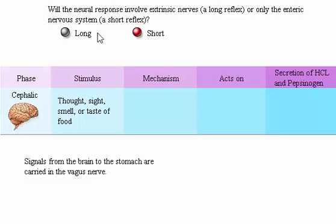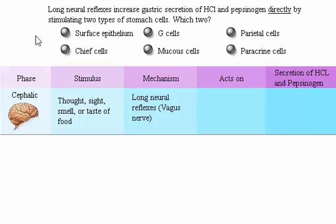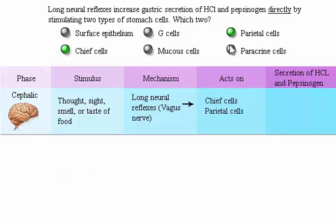Signals from the brain to the stomach are carried in the vagus nerve. Long neural reflexes increase gastric secretion of hydrochloric acid and pepsinogen directly by stimulating two types of stomach cells.